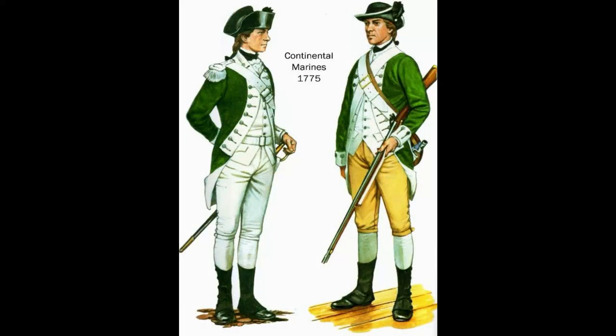We're told that the Continental Marines uniform of 1775 was a green coat with white or gold pants. And if you'll notice, Army uniforms have a gold stripe down the side of the pants. So clearly we're lied to about where the Continental Marine uniform comes from and, in fact, what color of uniform the Continental Army even wore.